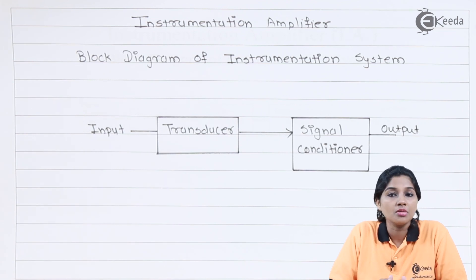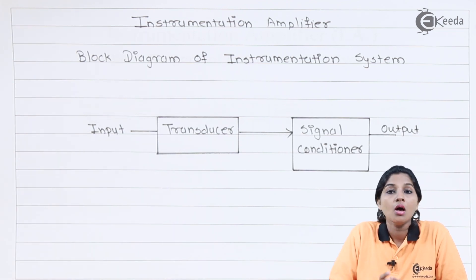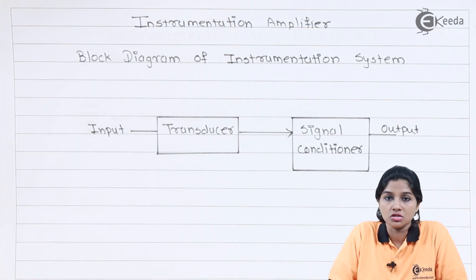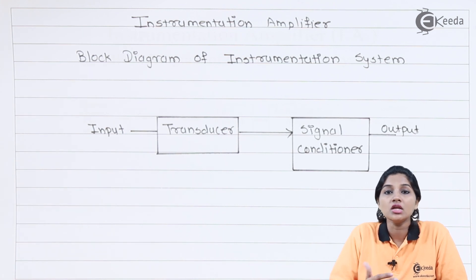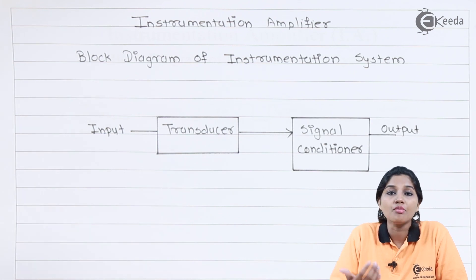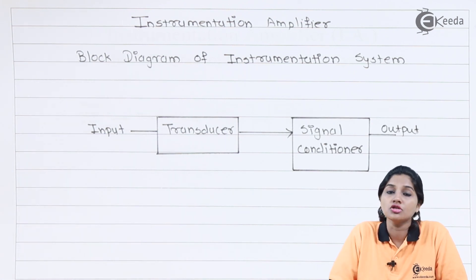The transducer converts pressure, temperature, and humidity into the equivalent electrical signal. But this output obtained from the transducer cannot be directly applied to the instrumentation system, because the output of the transducer is a very low level signal. Therefore, it is necessary to condition and process the signal properly so that it can drive the instrumentation system.